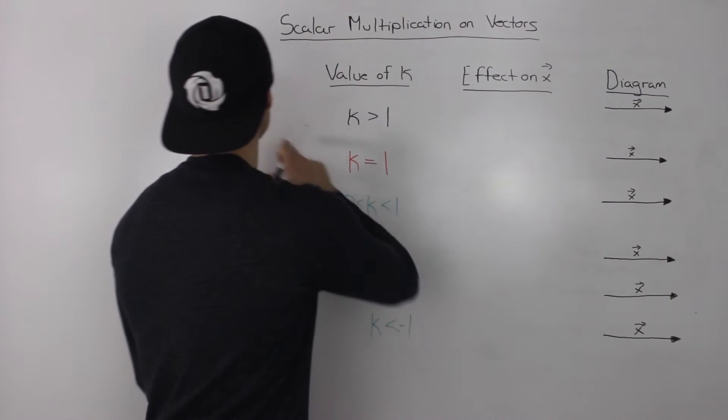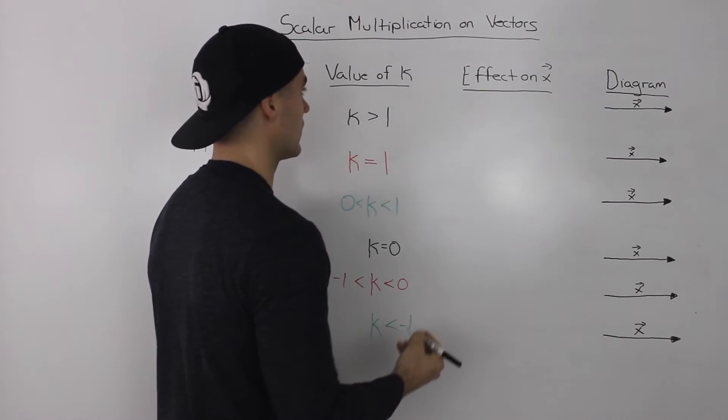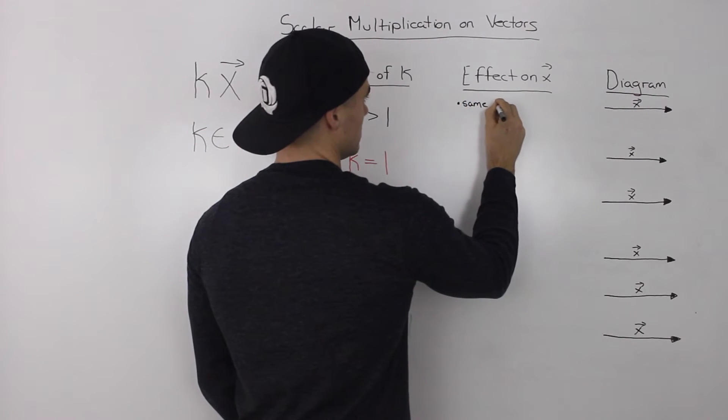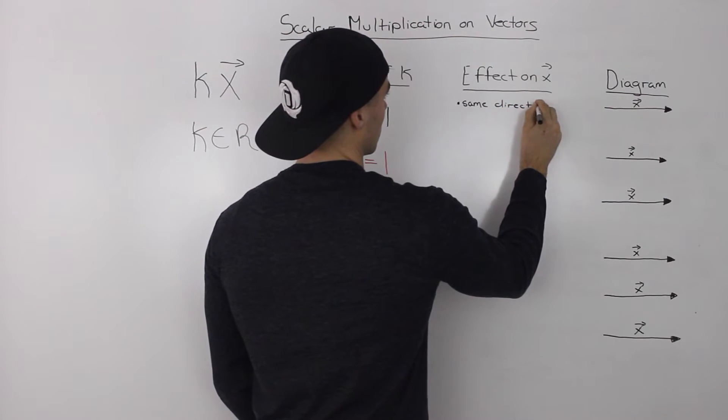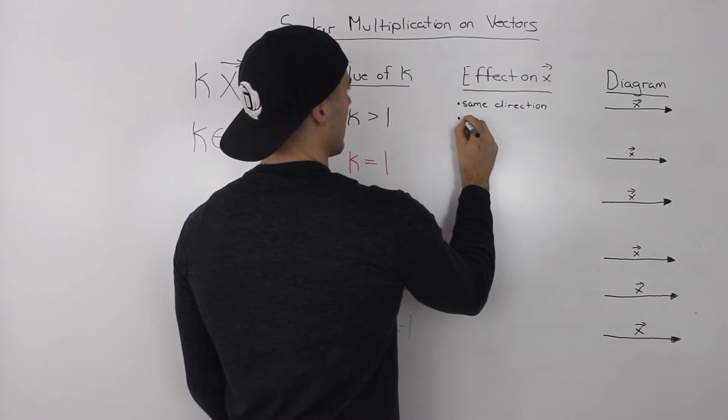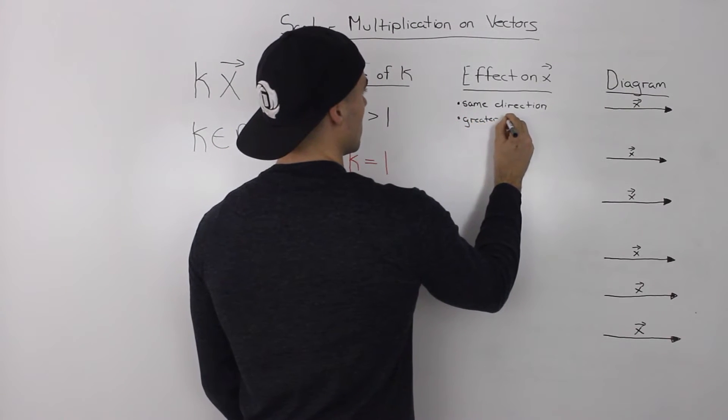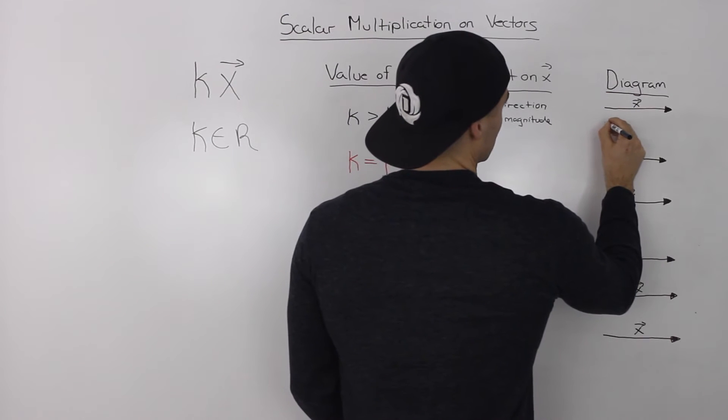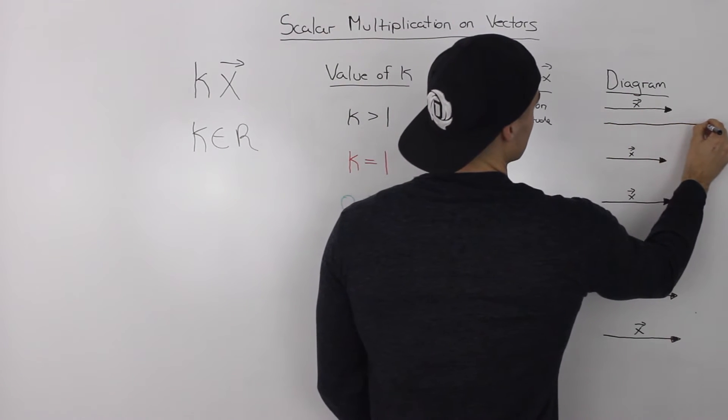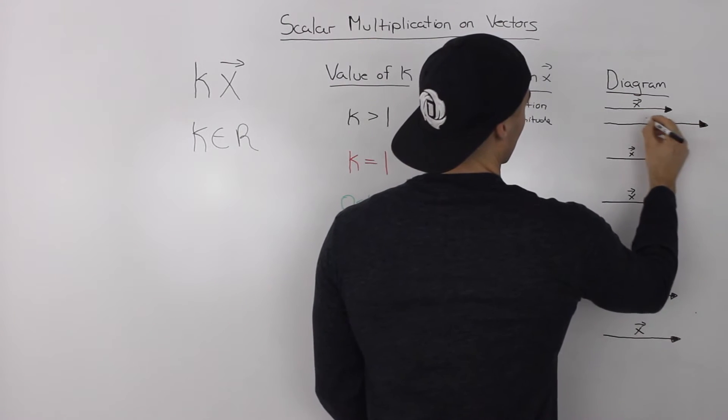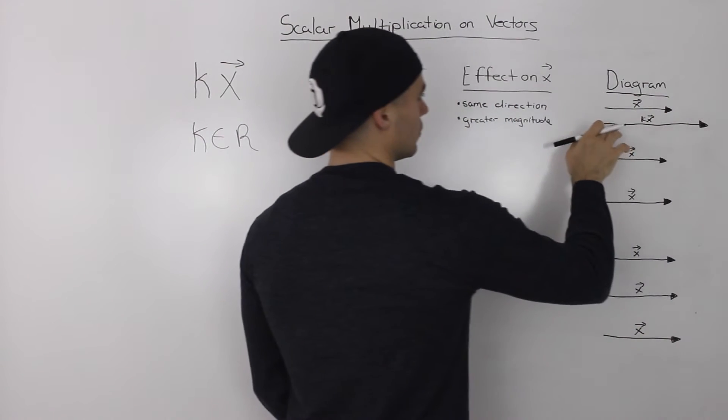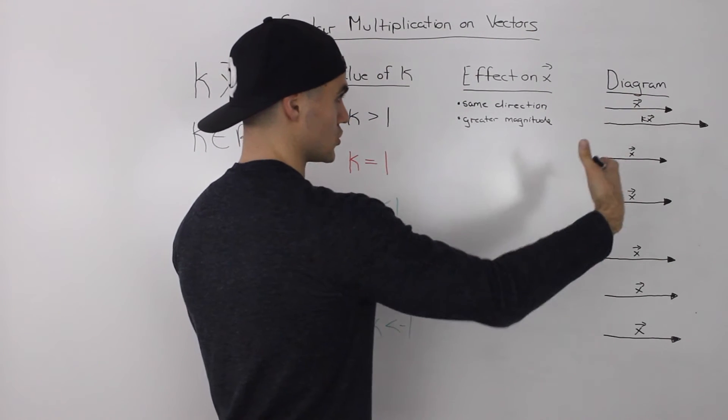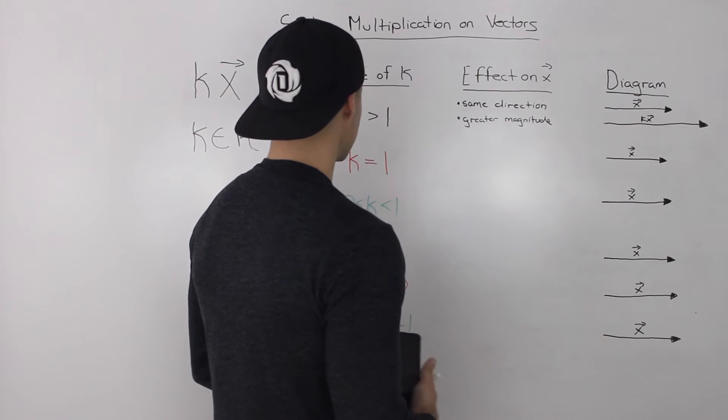So let's start with our first case. What happens when the scalar that we multiply the vector by is greater than positive one? Well, the resultant vector will keep the same direction. However, it will have a greater magnitude. So it will look something like this. Depending on what scalar we multiply it by, it will keep the same direction, but it will have a greater magnitude. So if we multiply it by two, same direction, twice the magnitude.